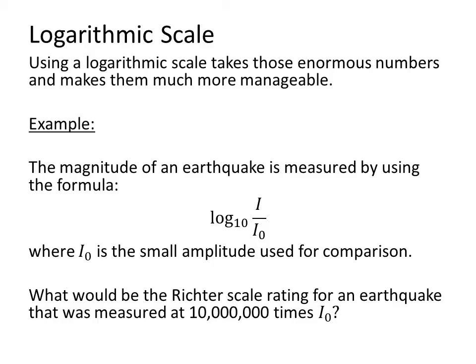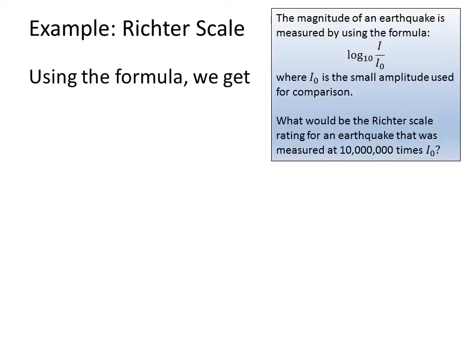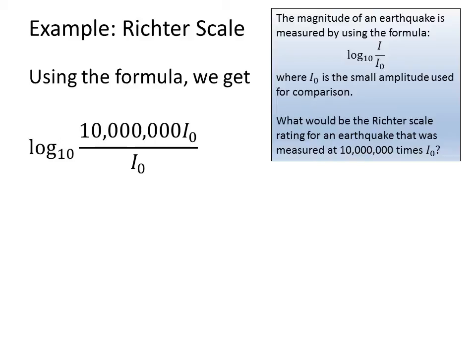So we use a logarithmic scale. Using a logarithmic scale takes those enormous numbers and makes them more manageable. The magnitude of an earthquake is measured by using the formula log base 10 of I over I₀, where I₀ is the magnitude of that small amount used for comparison. So what would the Richter scale rating be for an earthquake that was measured at ten million times I₀? Using this formula, we get the log base 10 of ten million times I₀ divided by I₀. Since there's an I₀ on the top and an I₀ on the bottom they cancel, and so we're left with the log base 10 of ten million, which is equal to 7.